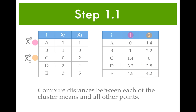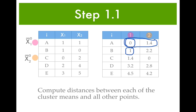The next step is to work out which distance is the smallest of the two. 0 is the smallest, so A is allocated to cluster 1. 1 is the smallest, so B is allocated to cluster 1. 0 is smaller than 1.4, so C is allocated to cluster 2. 2.8 is smaller than 3.2, so D is allocated to cluster 2. And 4.2 is smaller than 4.5, so E is allocated to cluster 2.